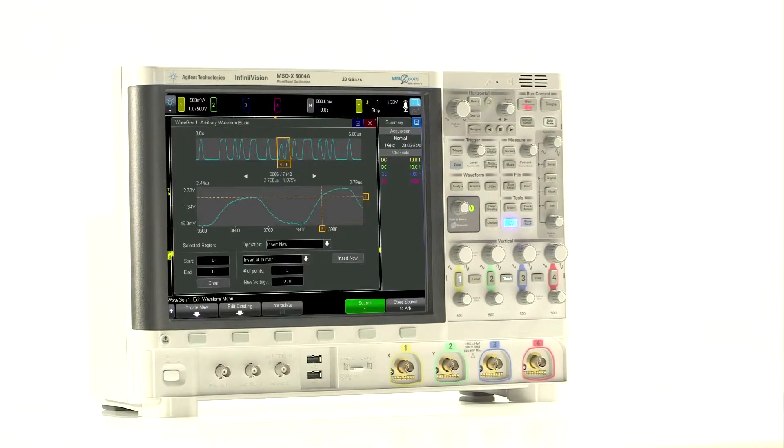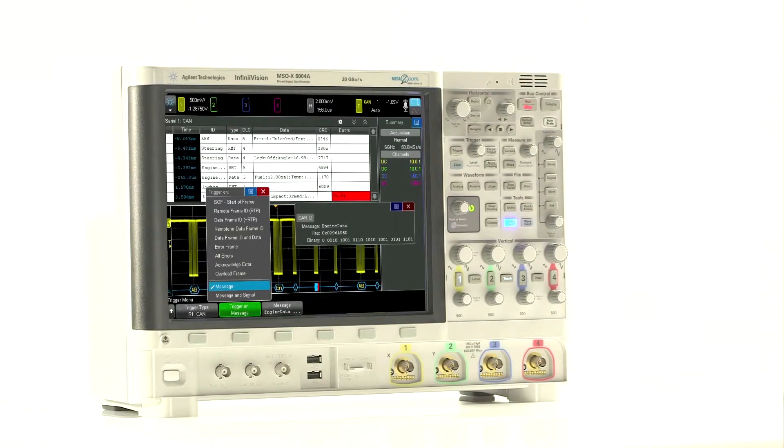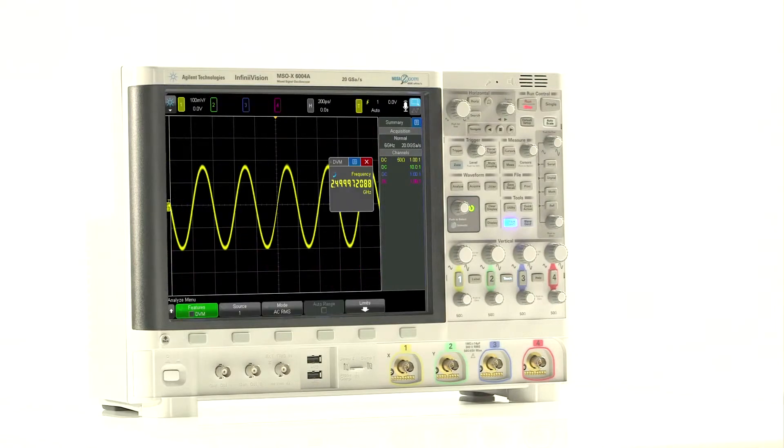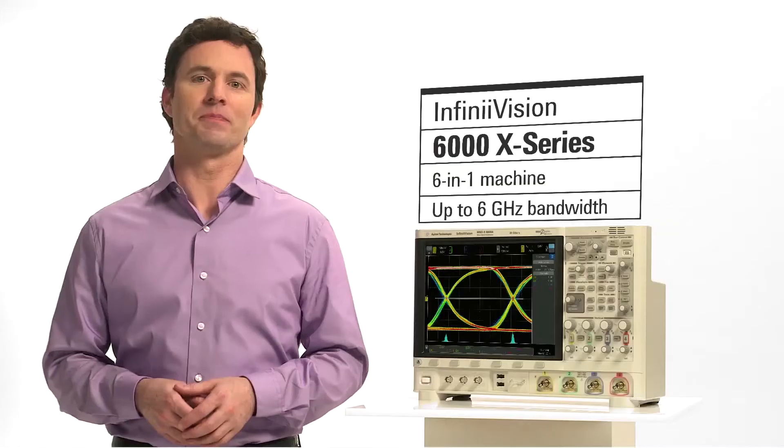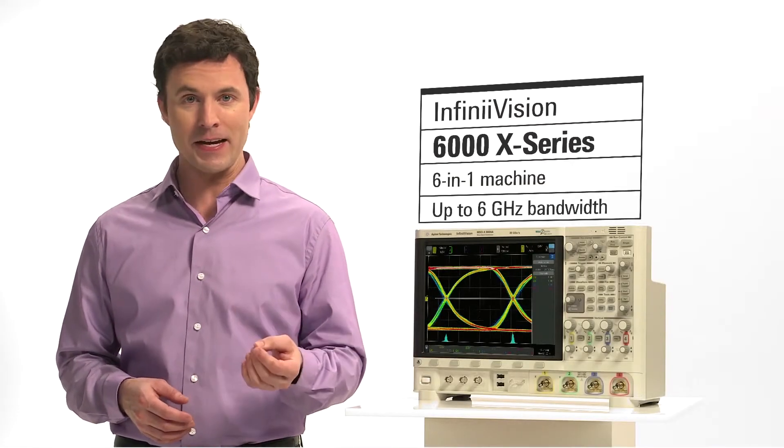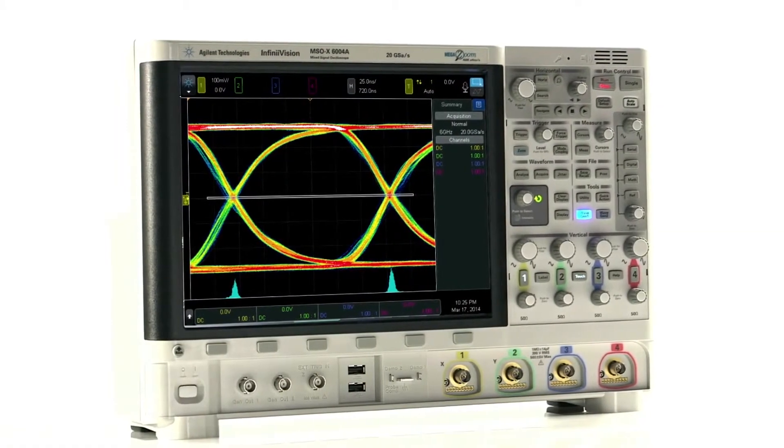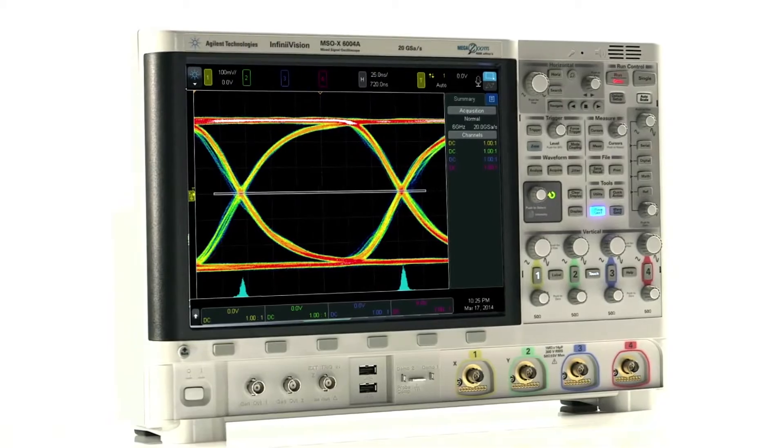it's a dual-channel arbitrary waveform generator, a serial protocol analyzer, a three-number digital voltmeter, and a 10-digit counter and totalizer. This six-in-one machine is also fully upgradable, so you can get the performance you need today and upgrade bandwidth and other functionality later, all at a fraction of the cost of a new scope.